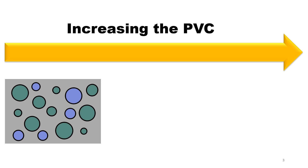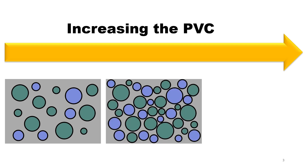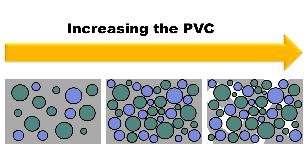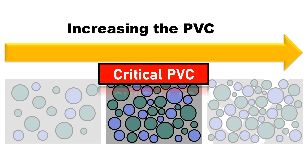As you increase the pigment volume concentration, there will be less binder available to cover the surface of the pigments, until the binder can no longer fully wet or cover the pigment particles. This leads to the formation of small voids that are filled with air. The ratio of pigment to binder at which the pigment particles are just fully wetted by the binder is called the critical pigment volume concentration (CPVC).